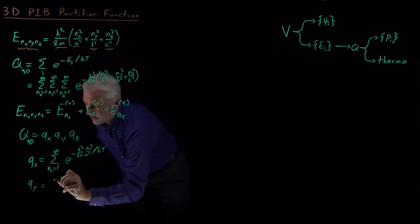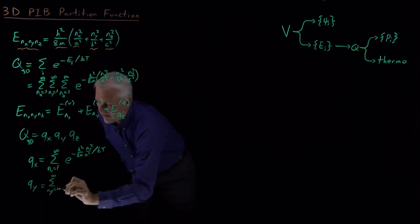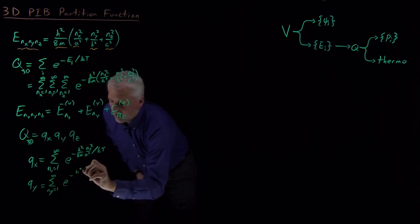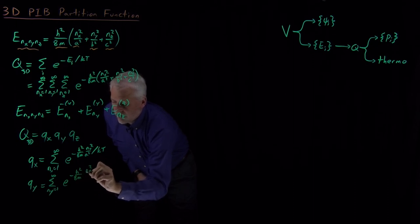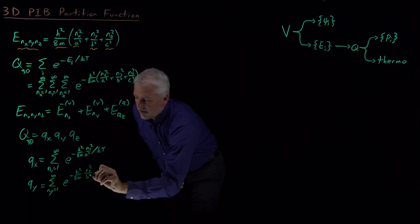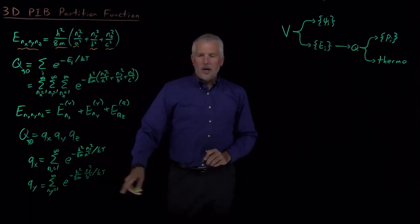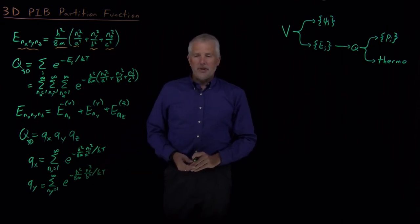There's very similar terms for qy and qz. The only differences are, I'm summing over n sub y. My dummy variable has a different name, although that's not terribly important. So I'm summing over n y squared. What is important is that I'm dividing by the box size in the y direction, dividing n sub y squared by b squared, because the box length may be different in the y direction than it is in the x direction.